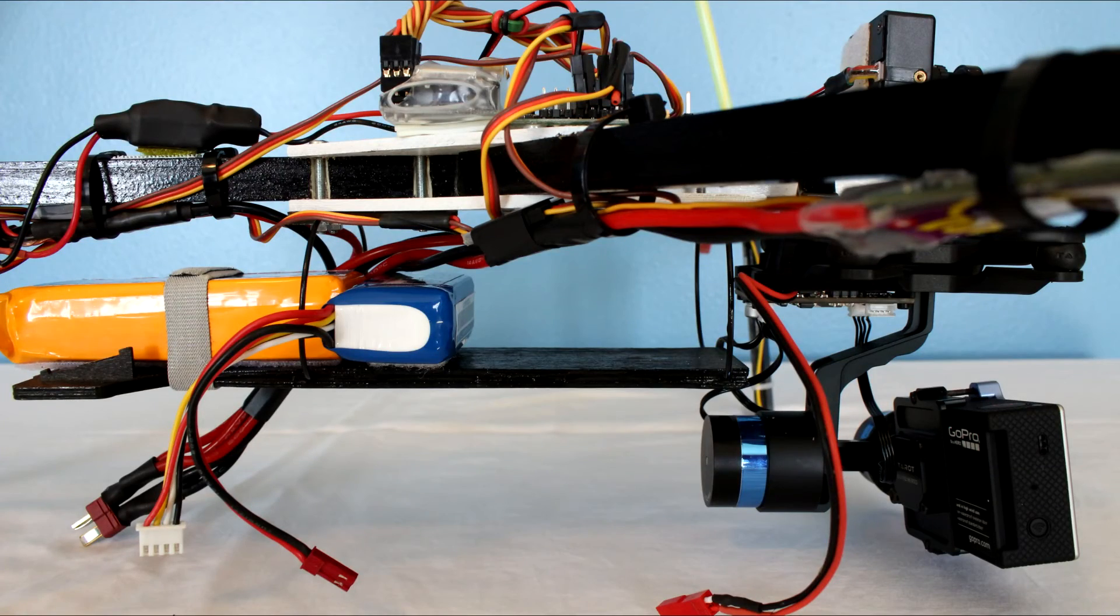The gimbal sticks under the frame a bit, in the way of the old camera slash battery tray, so I just turn the camera tray around underneath and cut off the end a bit.